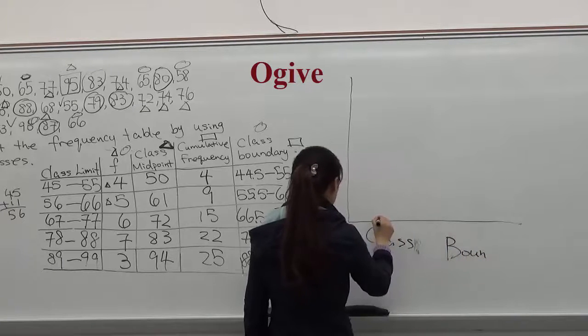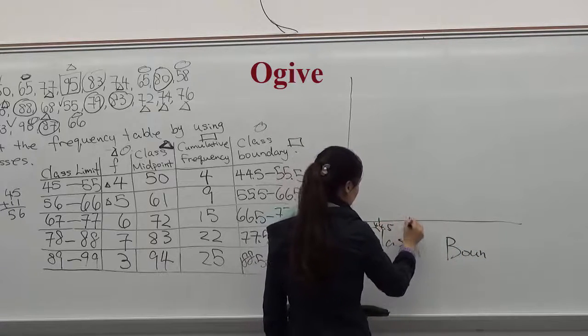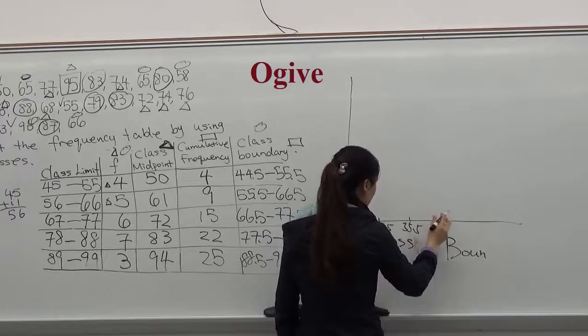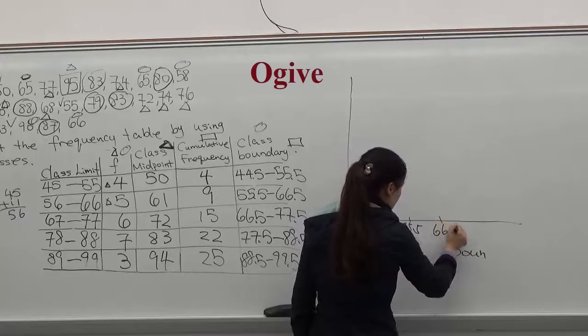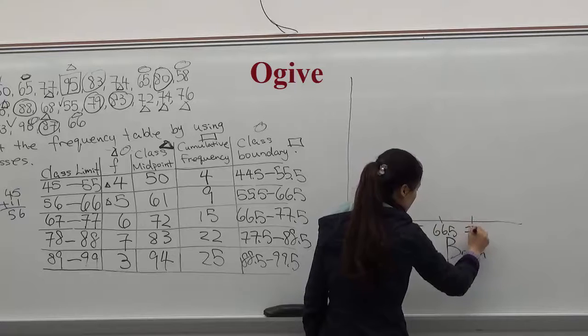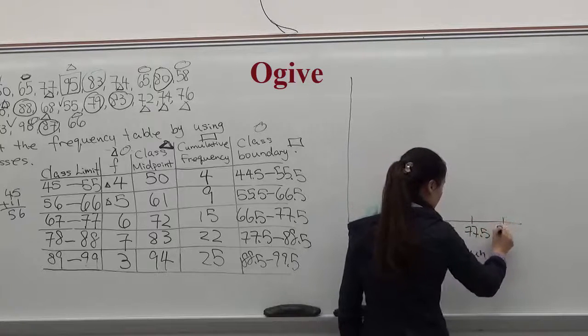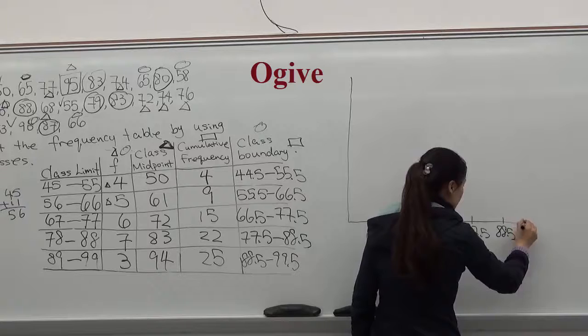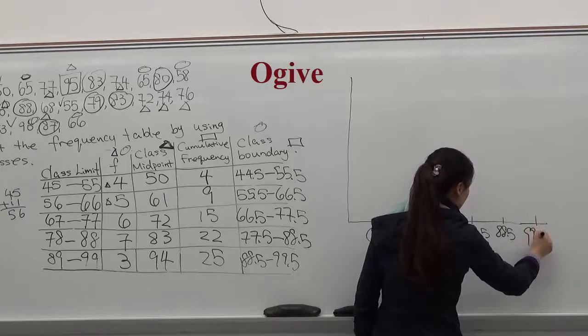Class boundaries. Label the numbers 44.5, 55.5, 66.5, 77.5, 88.5, and 99.5.